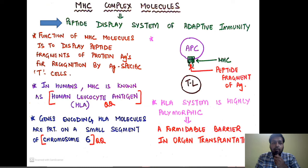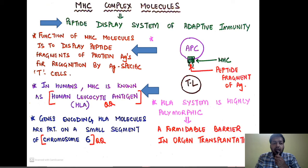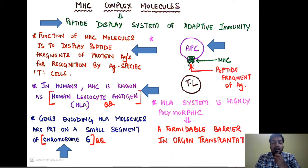So what is the MHC? The MHC stands for the major histocompatibility complex. It is basically a peptide display system of adaptive immunity. The basic function of the MHC molecule is to display the peptide fragments derived from the microbes or protein antigens for recognition by the antigen-specific T cells. In human beings, the MHC is also called HLA — the human leukocyte antigen — and the genes encoding the HLA molecules are present on a small segment of chromosome number 6. These are very important MCQs which have come in various examinations.